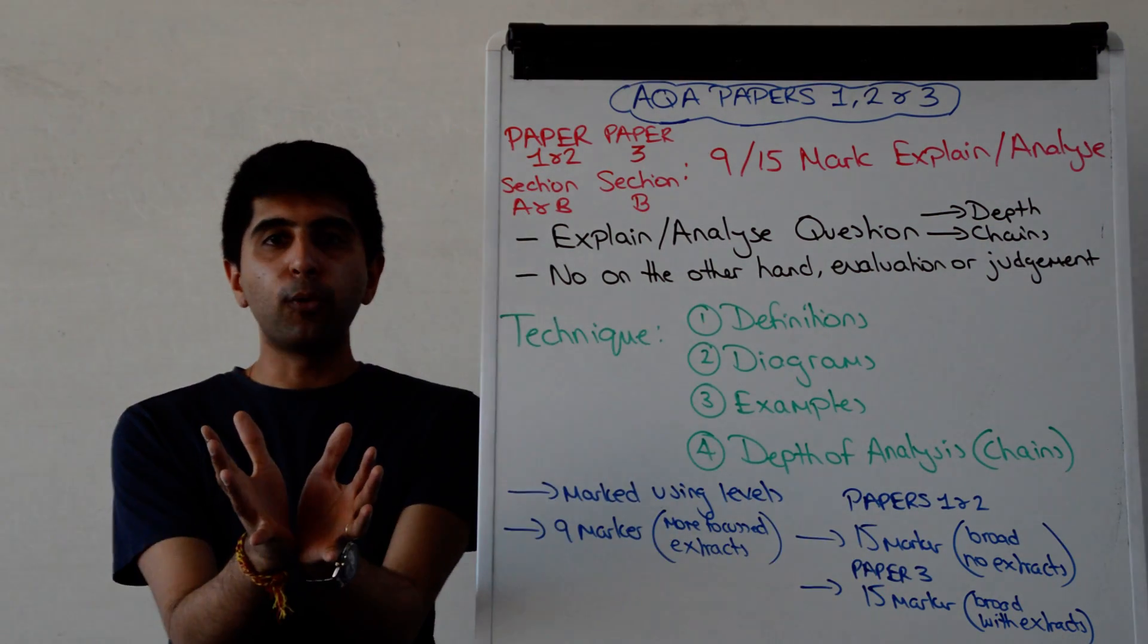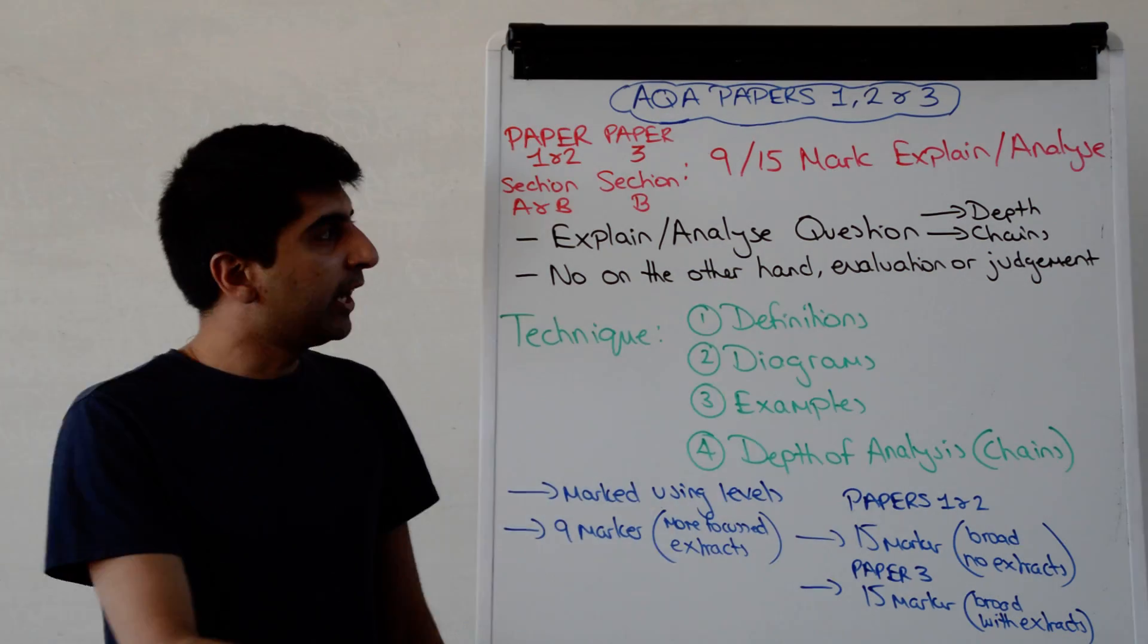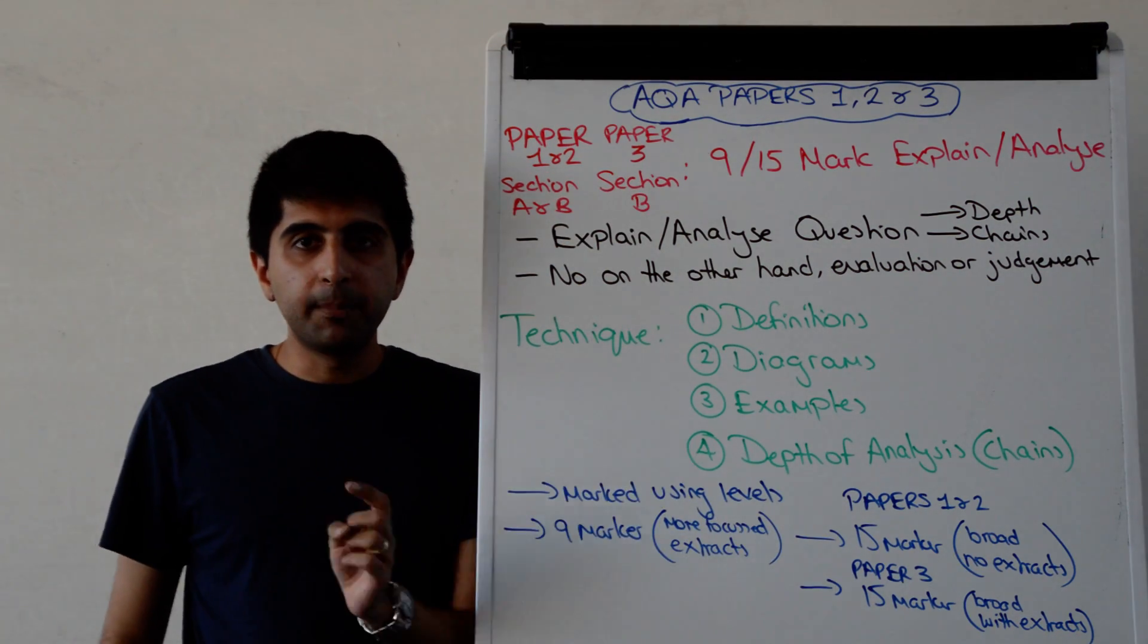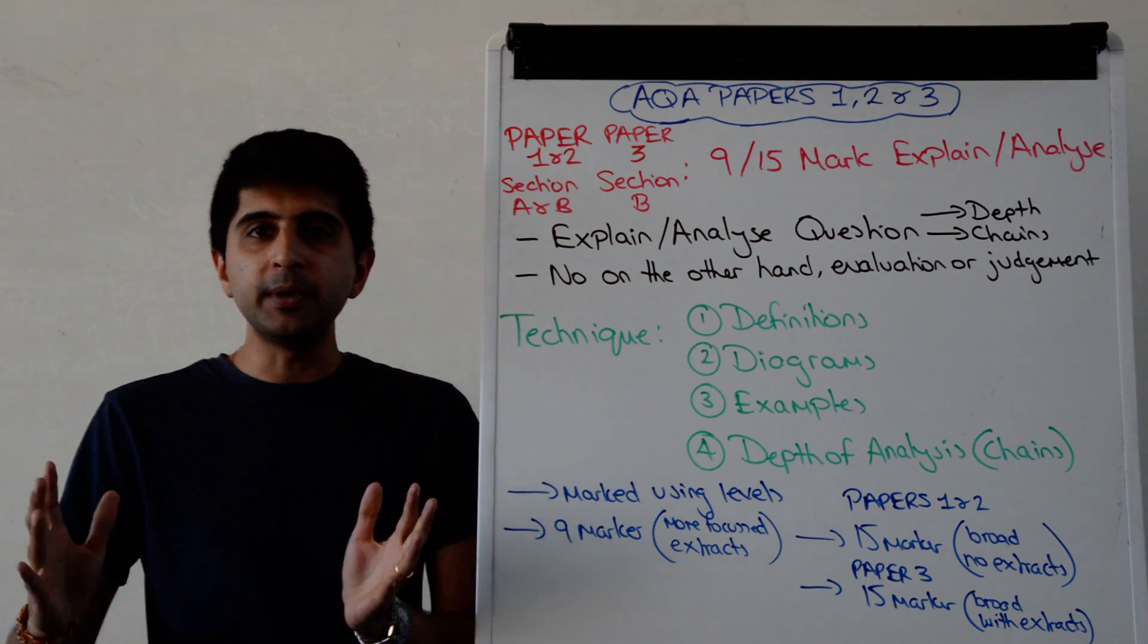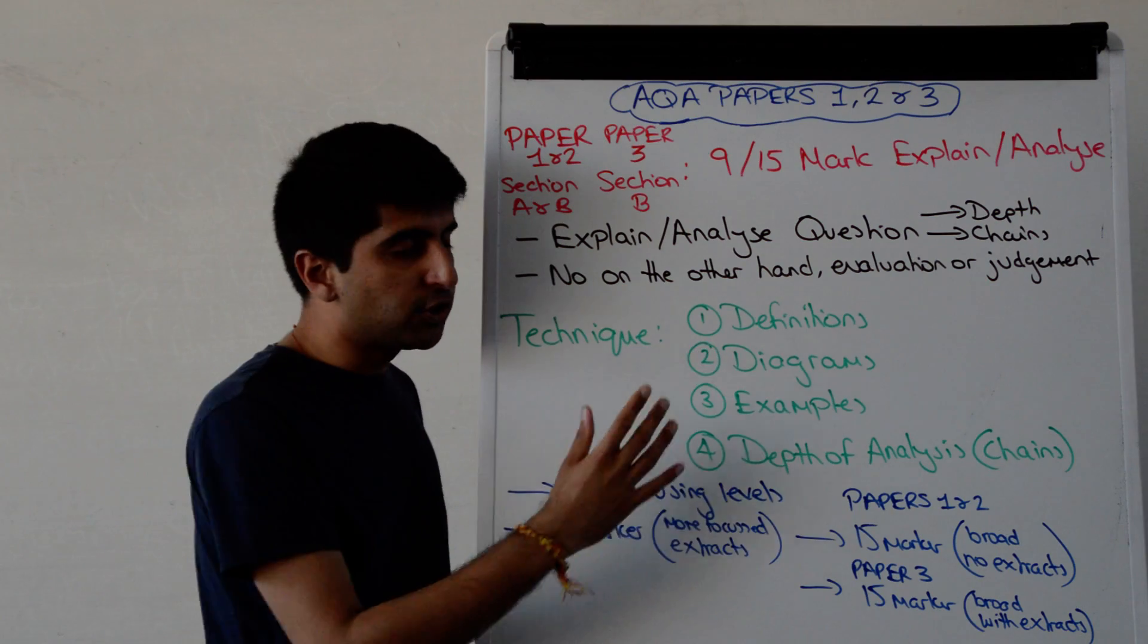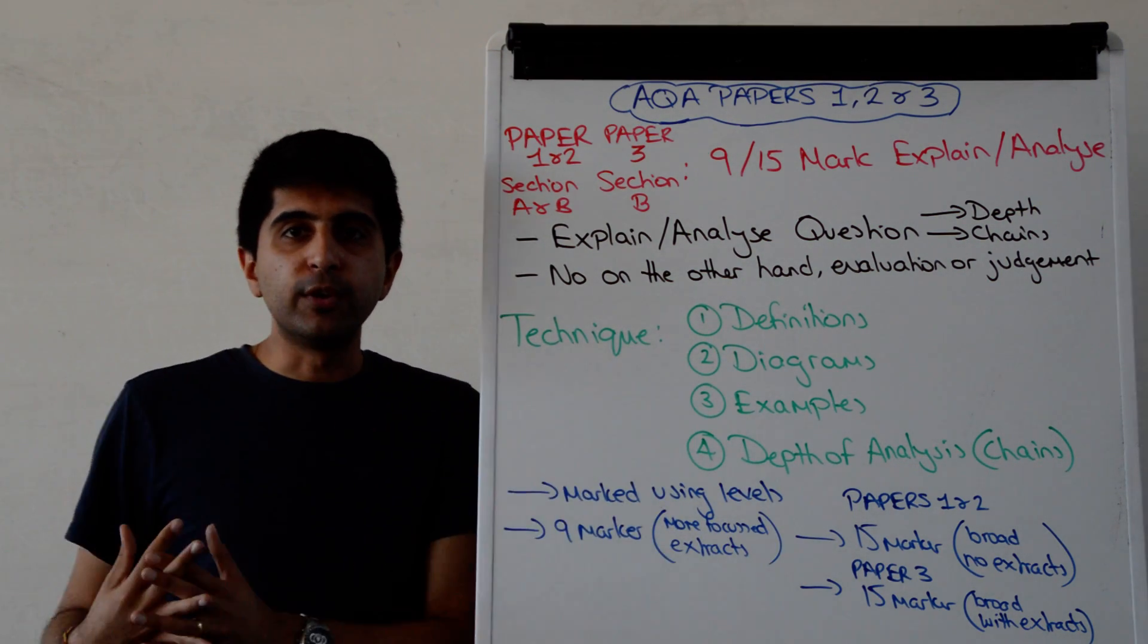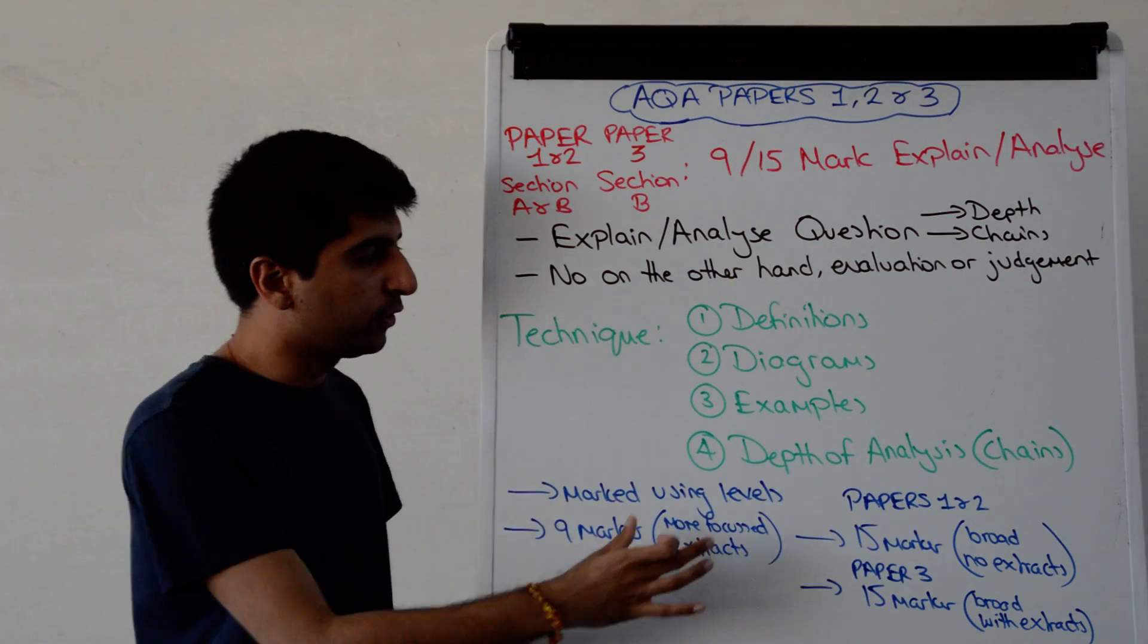Examples is so important, guys. If you want the best mark, you've got to make sure that you're applying. Now on the 9 marker in paper 1 and paper 2, you've got extracts to help you. That will make life super easy for application. The 15 marker in paper 2, you don't have application. You're going to have to do that on your own, from your own wider reading or from your own general knowledge, you'll need to apply.